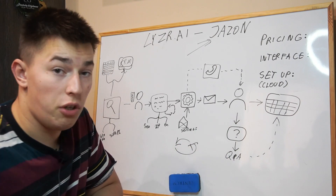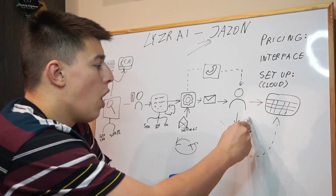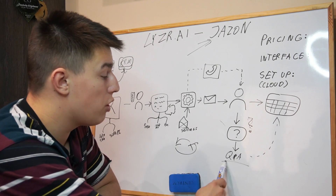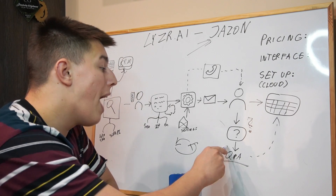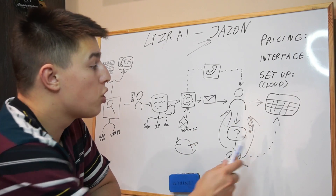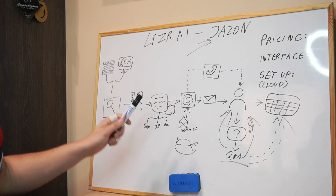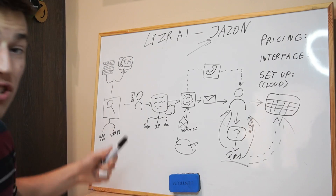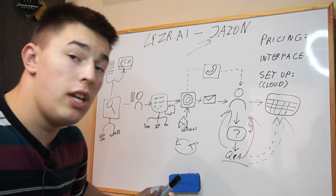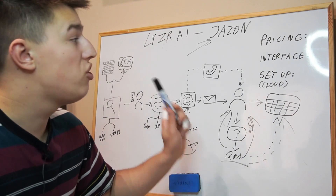Let's say your prospect does reply but has some objections or questions about your product. Jason will dig into the FAQs you provided about your product and use those answers to handle objections and answer questions from your prospect so they end up booking a sales call. The process is simple: you get the leads, and Jason does everything — researching them, crafting personalized emails, sending those emails, handling objections and replies, and booking the meetings.